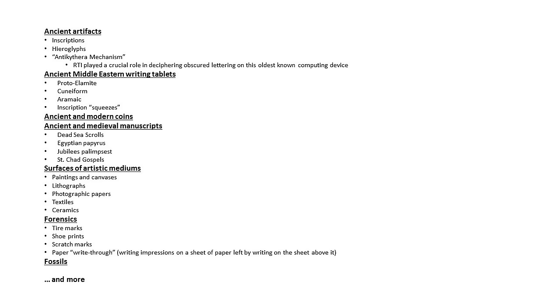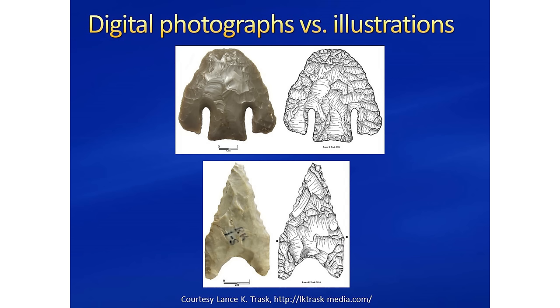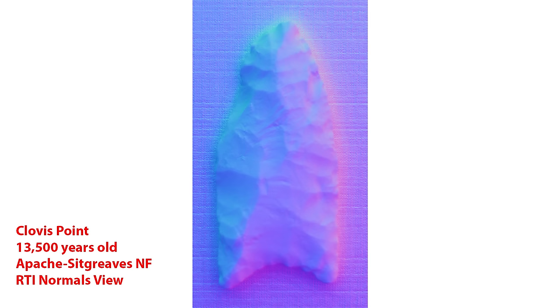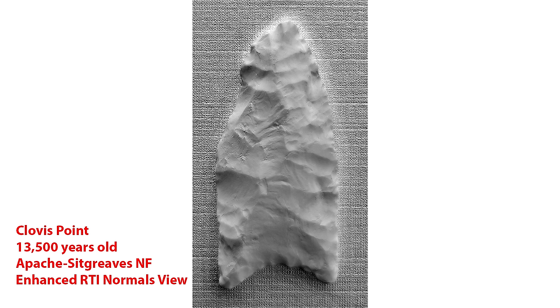Since its development in 2000 by Tom Molesbender of HP Labs, many uses for RTI have been found in a wide variety of disciplines. My interest in the technique started with the idea that it would be an ideal tool for photographing stone arrow and spear points. These are notoriously difficult to photograph well because the details can be very subtle, to the point where they are often illustrated with line drawings instead of photographs. RTI can bring out those details, and combined with software like Photoshop can create imagery comparable or superior to line drawings.